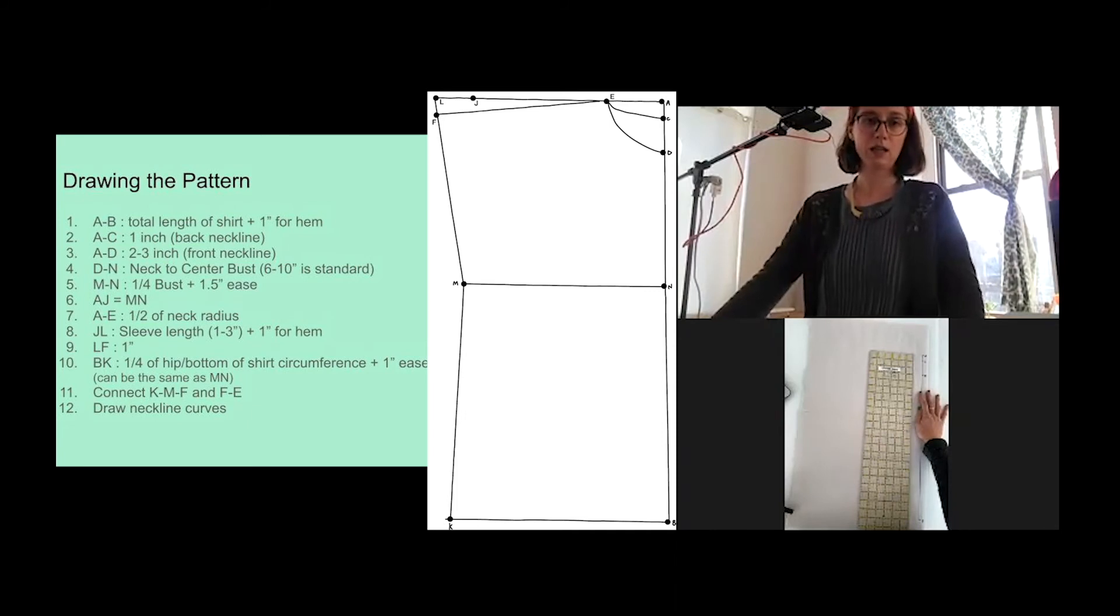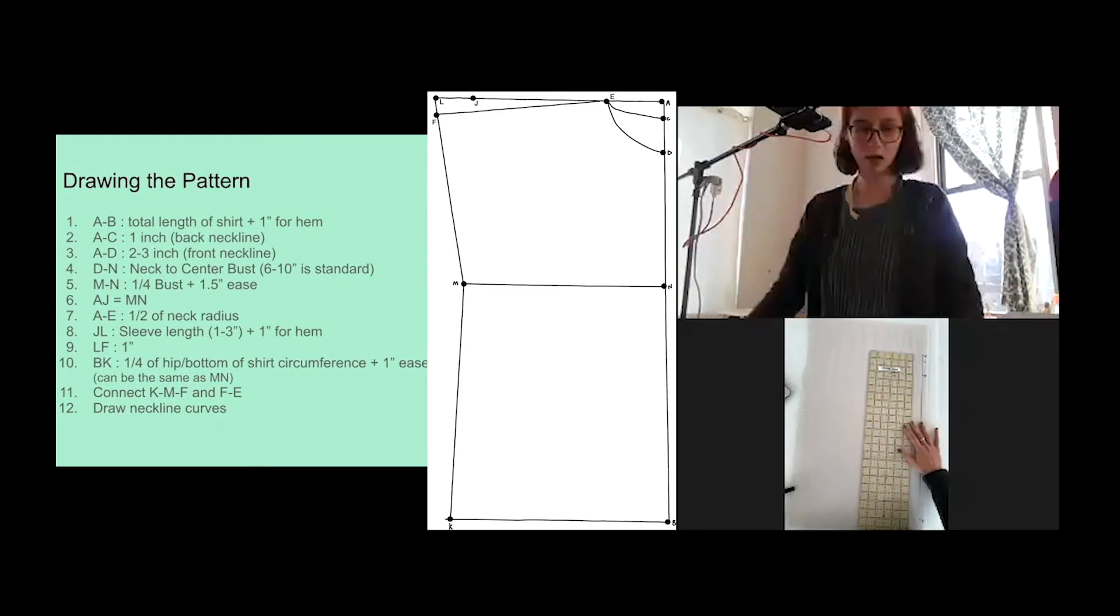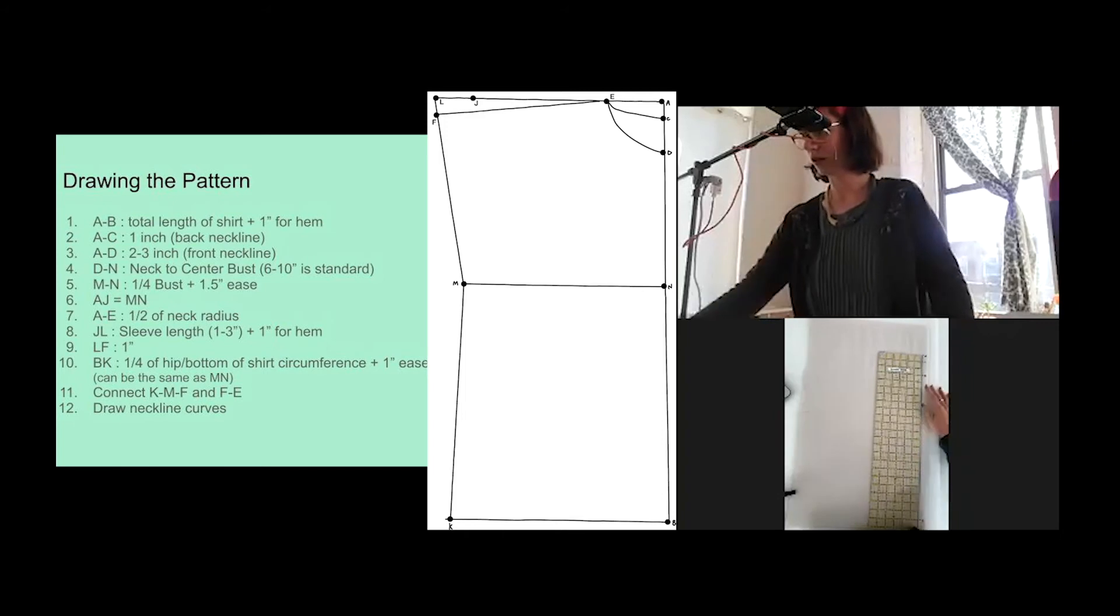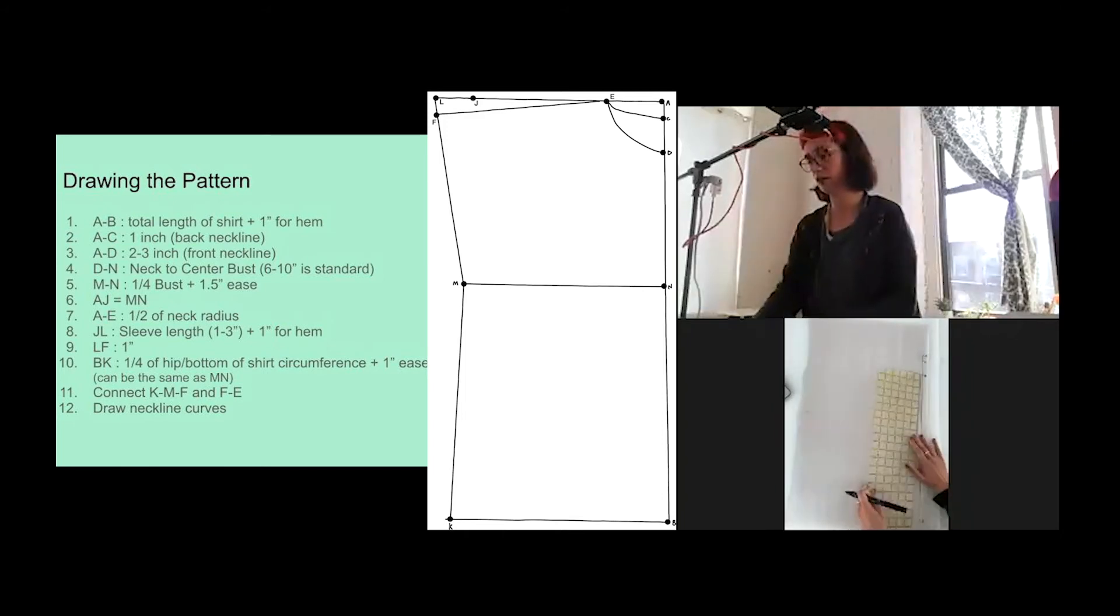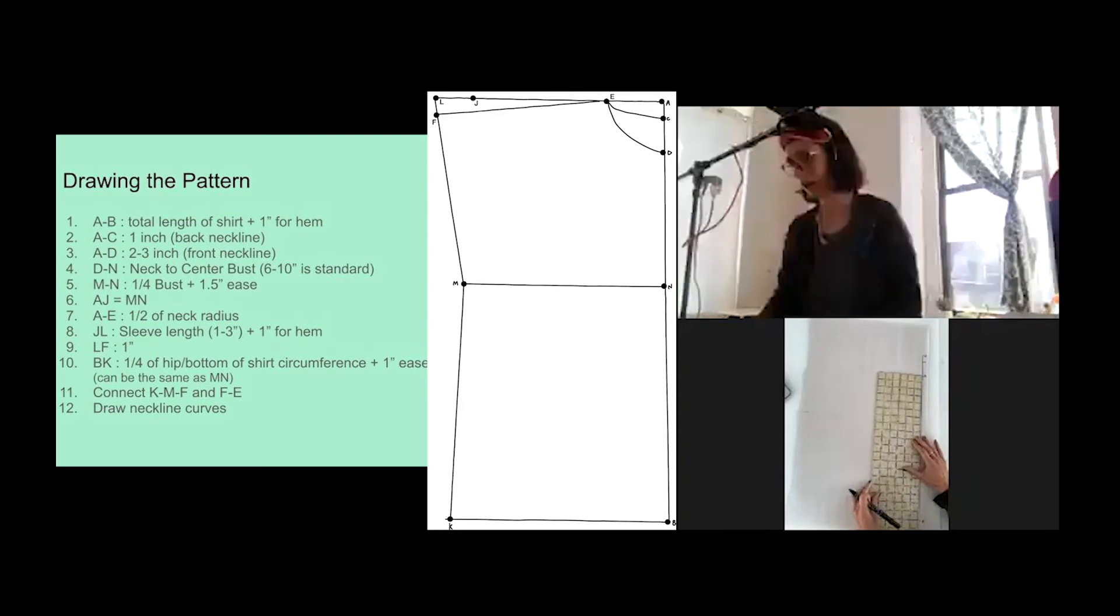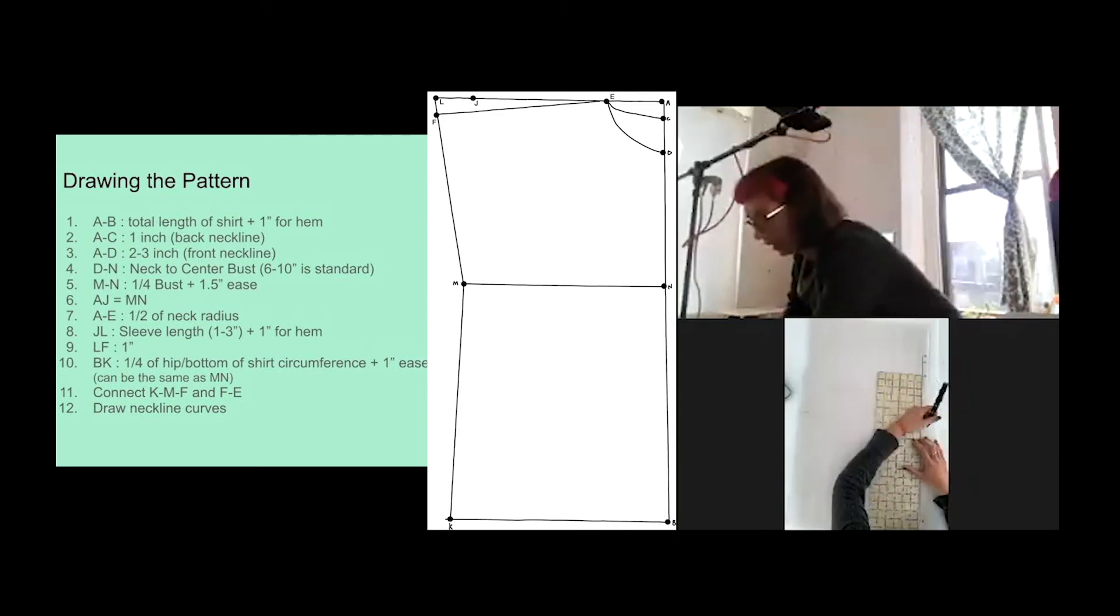So mine is seven and a half. So I'm going to measure seven and a half inches from D down still on this vertical line. And then that will be my N.